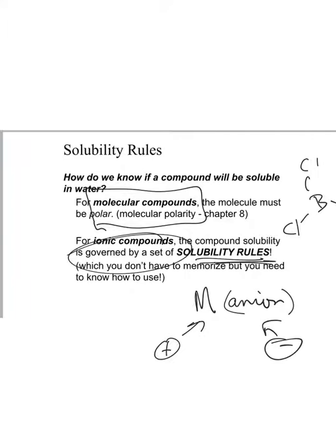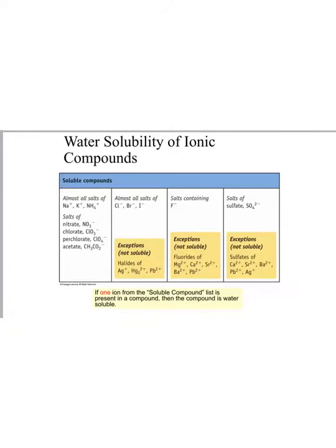This is why you need the solubility rules when you're doing a problem like this, because no one can possibly memorize every possible combination. There's so many elements on the periodic table that could lead to this. It's going to take impossible effort to memorize them all. So that's why you have solubility rules.